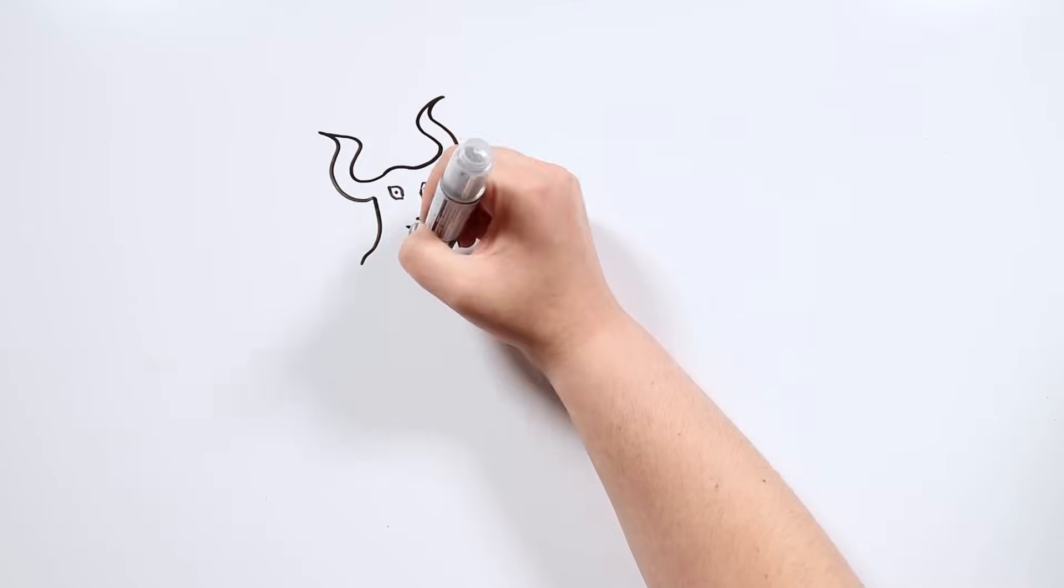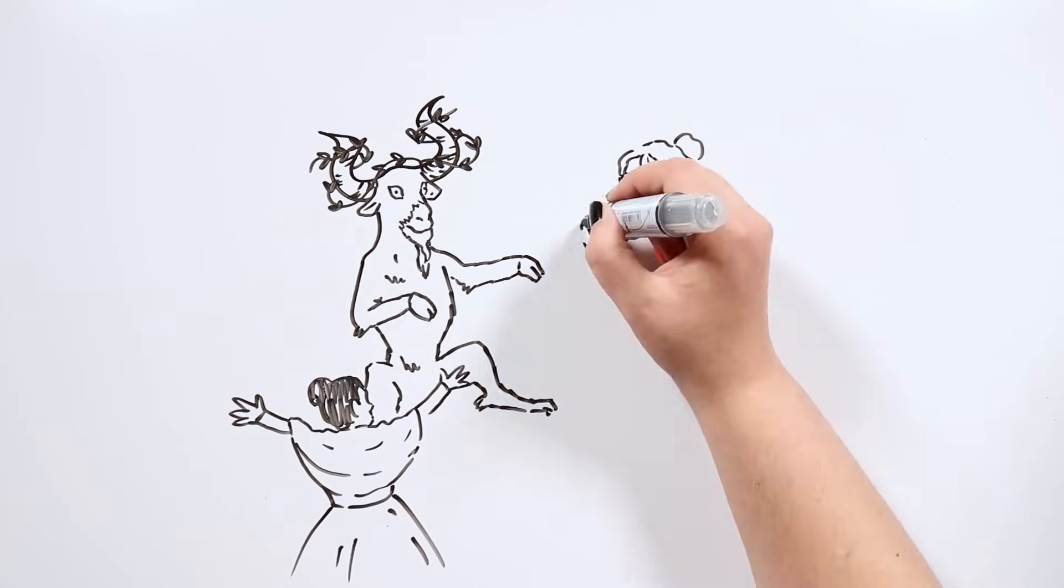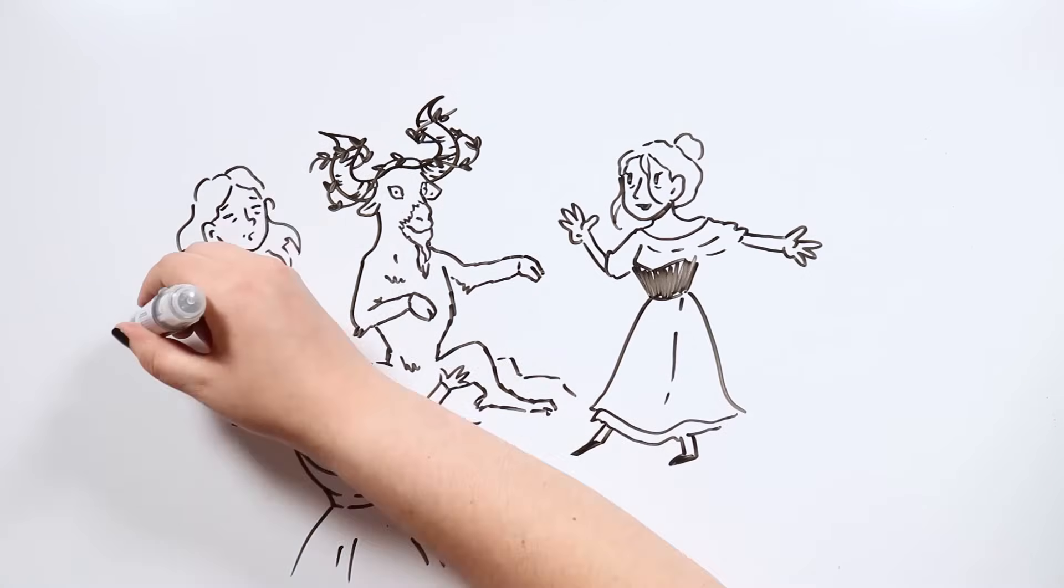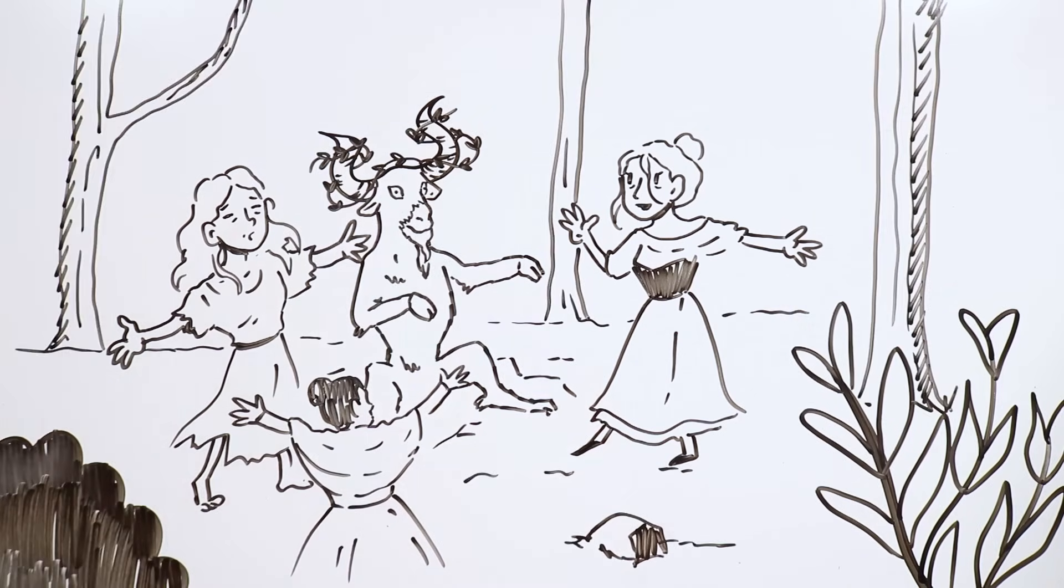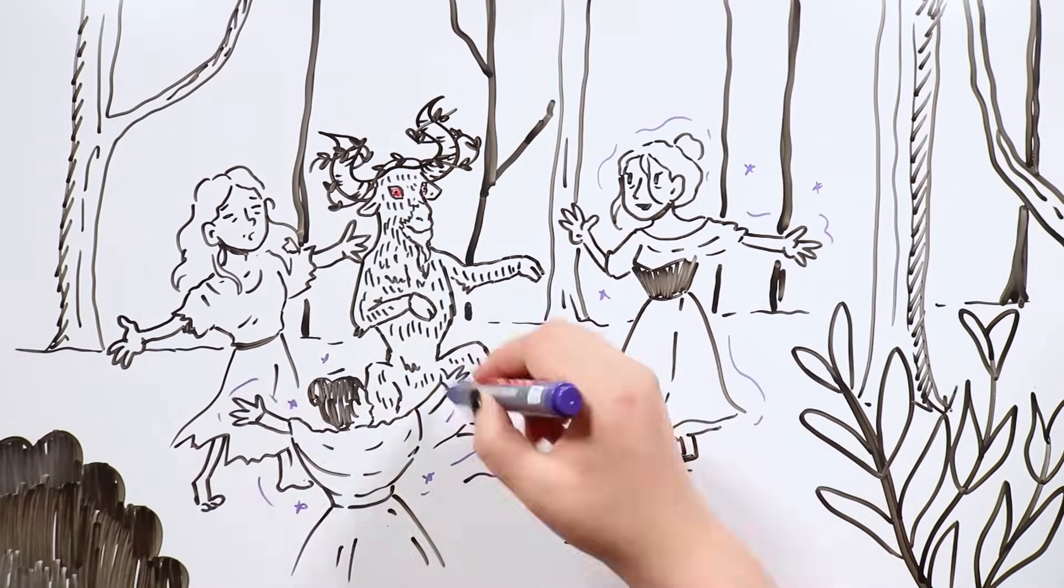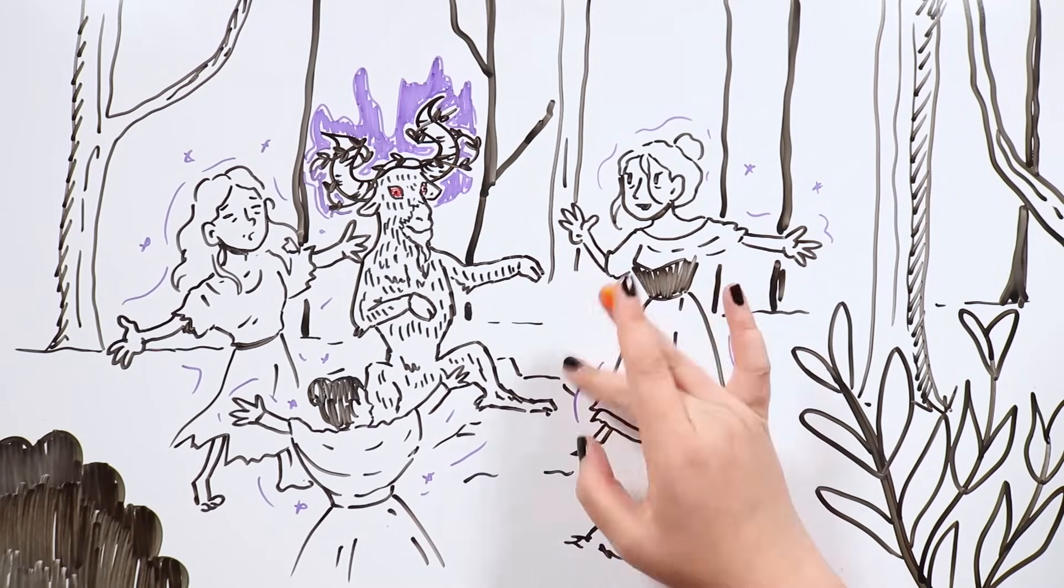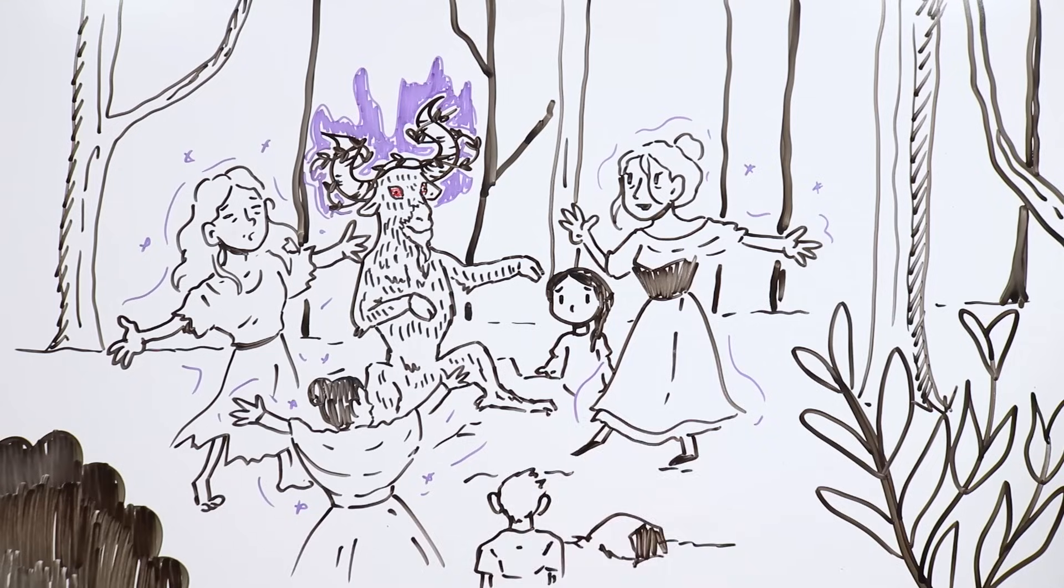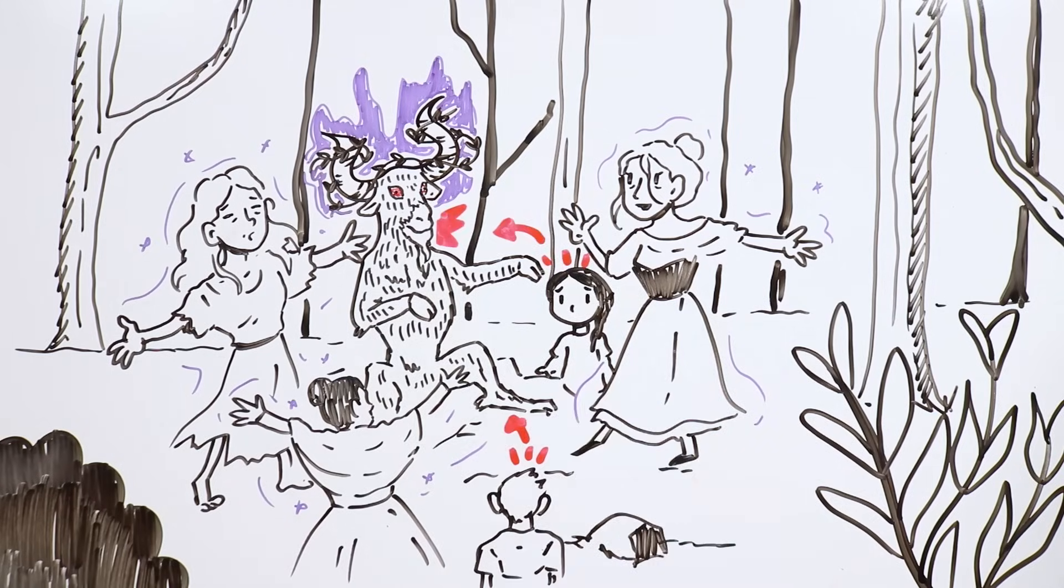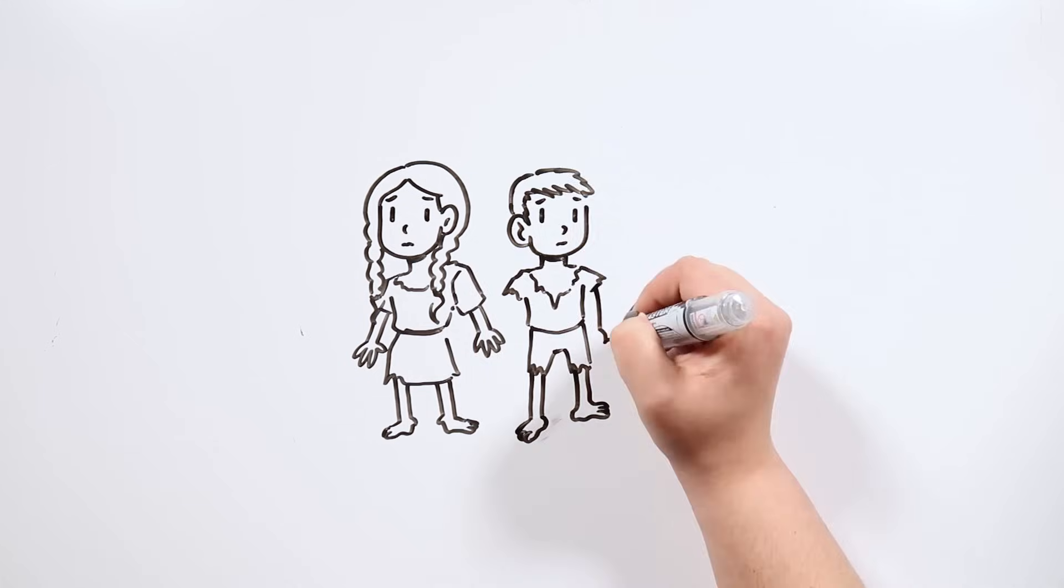Witches would gather at covens for sabbaths, parties celebrated at midnight where they would drink and dance in honor of the horned god of fertility and nature. To carry them out, they would choose remote places where they could practice magical rituals that would grant them even more powers. Those gatherings also served to convert new adepts: boys and girls who were kidnapped from their own homes and consecrated to that god. They would start as disciples of the other witches, serving them until becoming witches themselves.